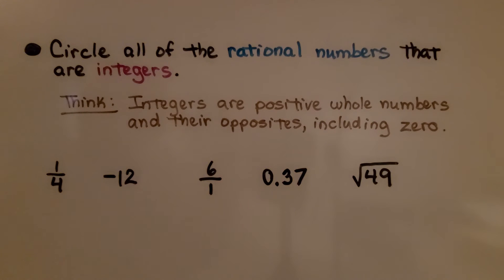Here it's telling us to circle all of the irrational numbers that are integers. So we're looking for rational numbers that are integers. Think. Integers are positive whole numbers and their opposites, including 0.